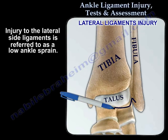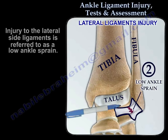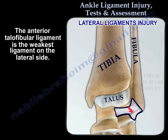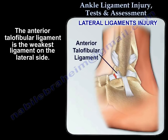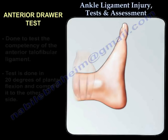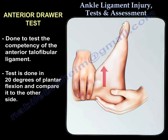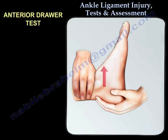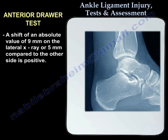Injury to the lateral side ligaments is referred to as a low ankle sprain. The anterior talofibular ligament is the weakest ligament on the lateral side. The anterior draw test is done to test the competency of the anterior talofibular ligament. The test is done in 20 degrees of plantar flexion, and always compare it to the other side. A shift of an absolute value of 9 mm on the lateral x-ray, or 5 mm compared to the other side, is positive.